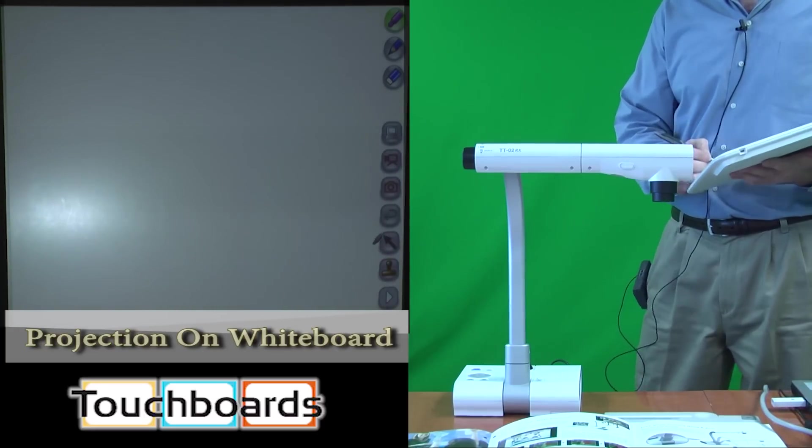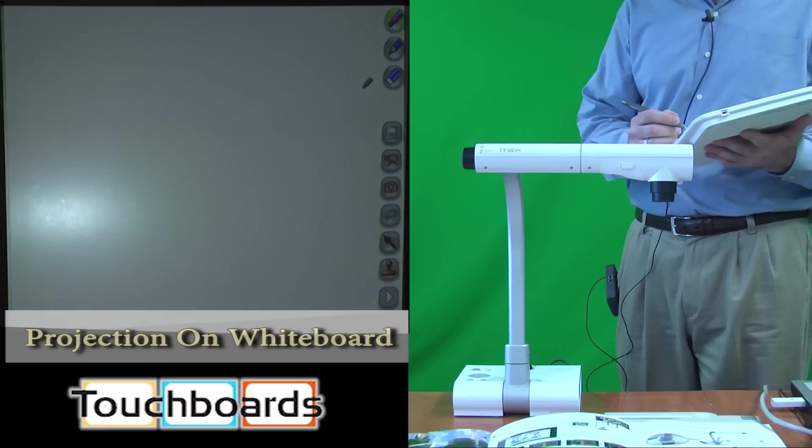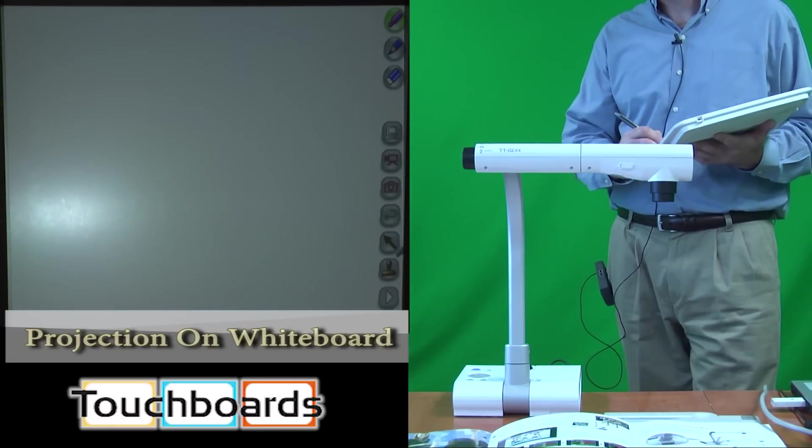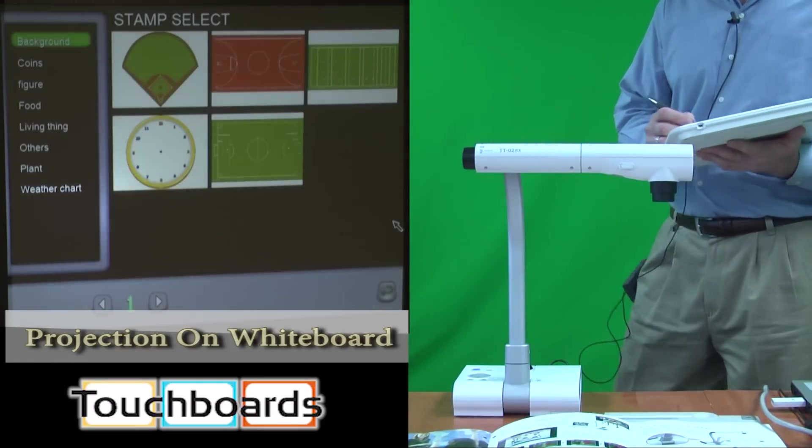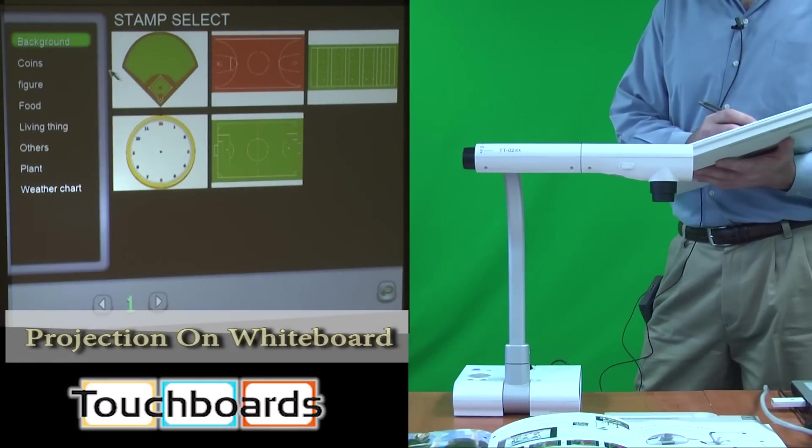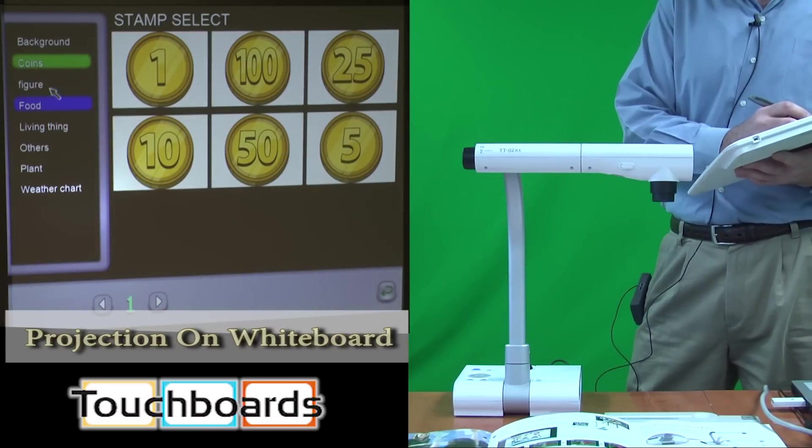So this becomes a very handy accessory for our TT-02, and will also work with several other ELMO document cameras that you may already have or that you may be interested in buying. We also have built into this some images, which may be useful, some templates for different things. This is our sports background.